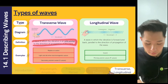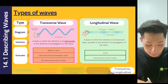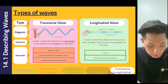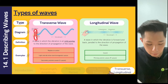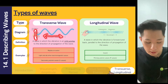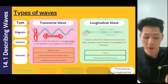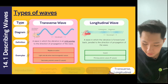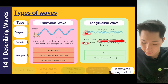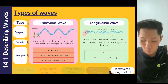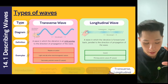The first type is the transverse wave, and the other is the longitudinal wave. For a transverse wave, it is a wave in which vibration is at right angles to the direction of propagation — the wave moves left and right, but the vibration is up and down, so there is a perpendicular relationship. For a longitudinal wave, vibration is forward and backward, parallel to the direction of propagation — both the vibration and the wave travel in the same left-to-right direction.